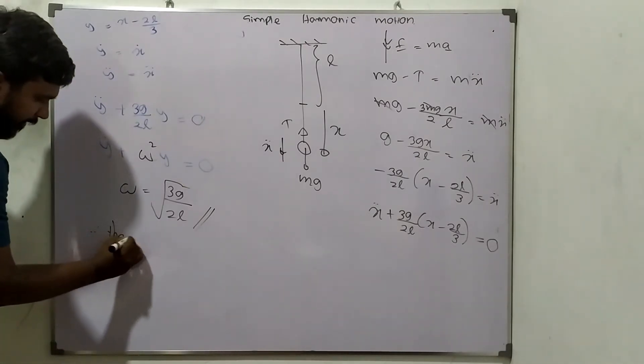Omega equal square root 3G over 2L. Right? Okay. So therefore, the particle moving on a simple harmonic motion. Right.